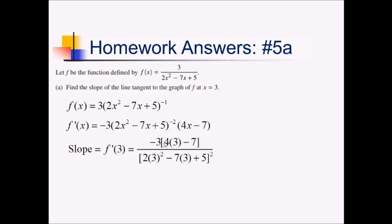We've got a numerator and a denominator here. In the numerator I've got negative 3, and then 4 times 3 minus 7. In the denominator, I have 2 times 3 squared minus 7 times 3 plus 5, all raised to the second power. This is the slope of this line. Simplifying: numerator is negative 3 times 5, which is negative 15. Denominator: 18 minus 21 plus 5 is 2, so 2 squared is 4. Our final simplified answer is negative 15 over 4.